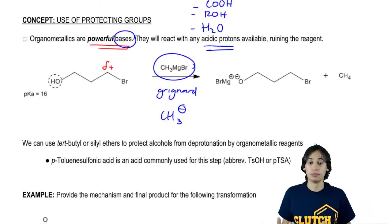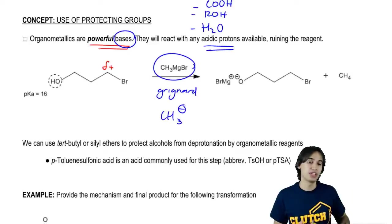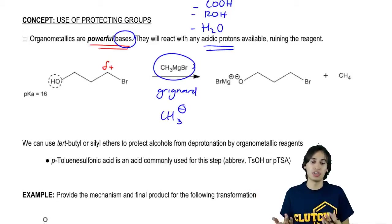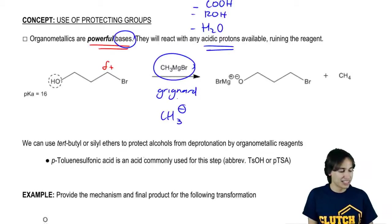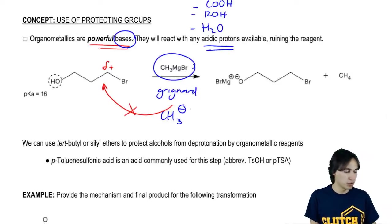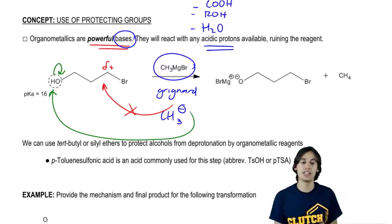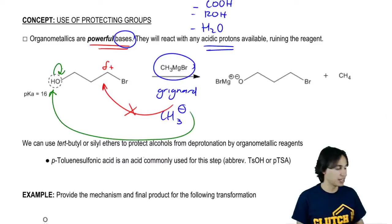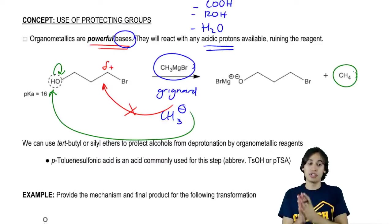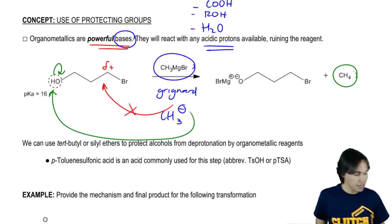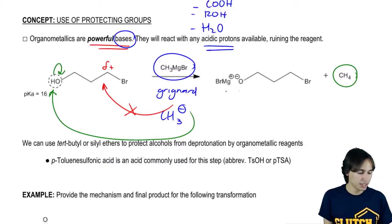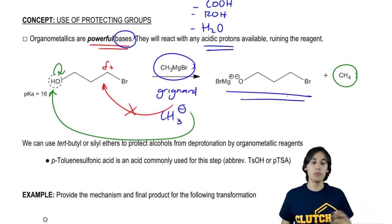That alcohol is going to be very acidic. Notice I put pKa of 16. That's acidic enough to react with my Grignard. So instead of reacting in an SN2, it winds up reacting with the proton as an acid-base reaction. What we wind up getting is CH4 because now you've got CH3 plus the H. Then you wind up getting a negative charge on the O.